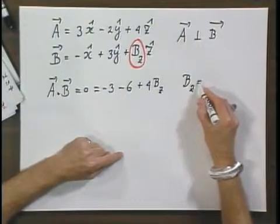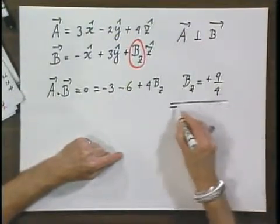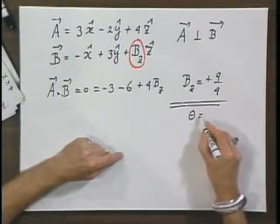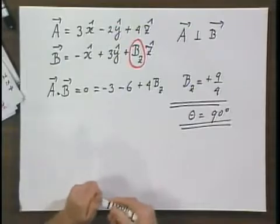So when B of Z equals plus nine over four, the angle theta will be ninety degrees. They are perpendicular to each other.